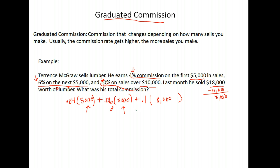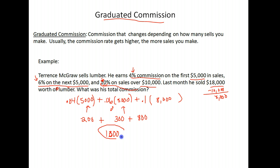Now we figure these out — make sure to do your multiplication first. 0.04 times $5,000 gives us $200, plus 0.06 times $5,000 gives us $300, plus 0.1 times $8,000 gives us $800. Adding those together: $200 plus $300 plus $800 equals $1,300. Terrence would make $1,300 in commission.